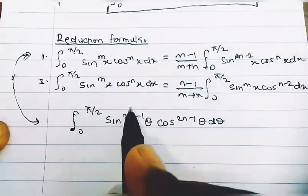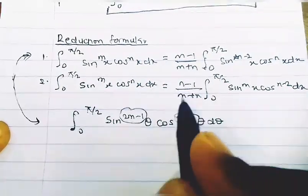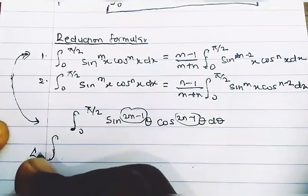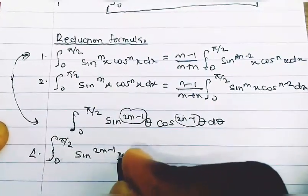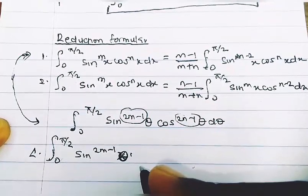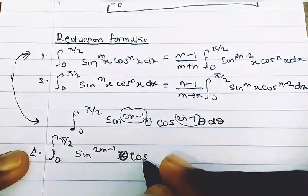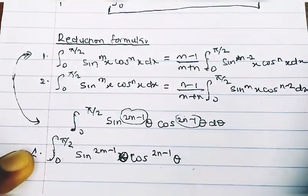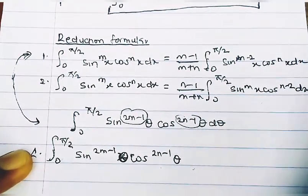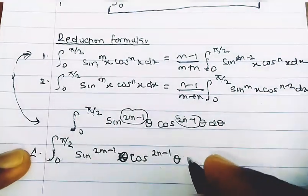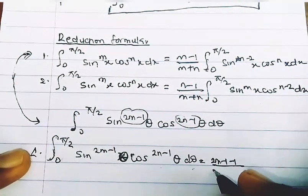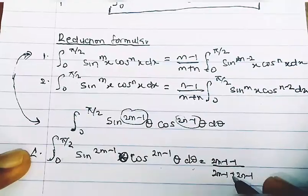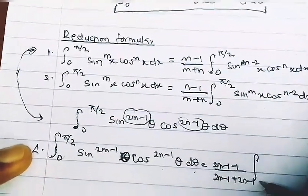Replacing m with (2m-1) and n with (2n-1), our formula becomes: the integral from zero to pi/2 of sine^(2m-1)(theta) cos^(2n-1)(theta) d-theta equals (2m-1-1) divided by (2m-1+2n-1), times the integral from zero to pi/2 of sine^(2m-1-2)(theta) cos^(2n-1)(theta) d-theta.